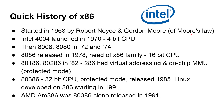Intel launched its first processor in 1970, a 4-bit 4004, and then it progressed to the 8008 and the 8080 in 1972 and 1974. And then here's the important one: in 1978, we had the 8086, which was the head of the x86 family. The 'x' means there are numbers that go before it and then 86 at the end. And it was a 16-bit CPU.